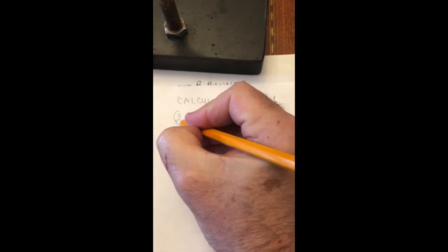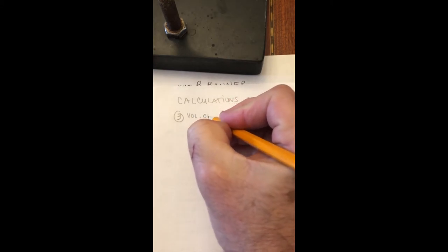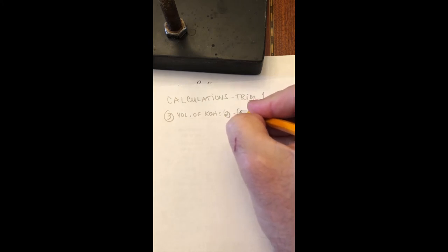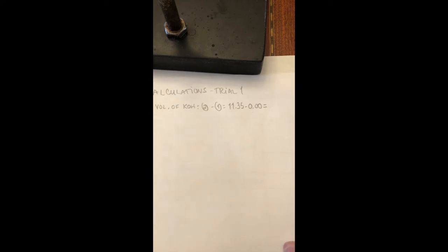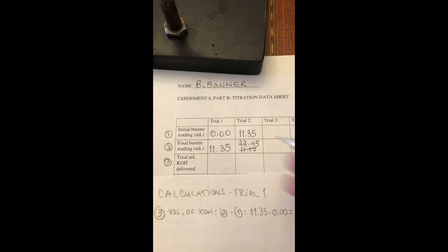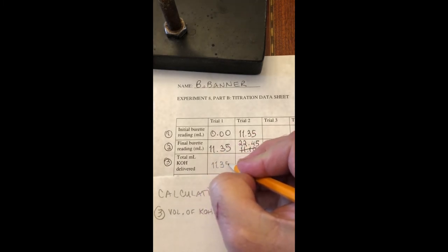So the first set of calculations we're going to do is, well, what is the volume of KOH delivered? And this is item number 3 over here. So we're going to say this is the volume of KOH. And we obtain that by subtracting the final minus the initial. So item 2 minus item 1, which in this case is 11.35 minus 0. Don't forget the two decimal places. And that means that our final result should have two decimal places. Be careful not to assume that you can eliminate that zero in the second decimal place because that is a significant figure. So we have 11.35 milliliters. So we're going to come back here to our data sheet and write that down.